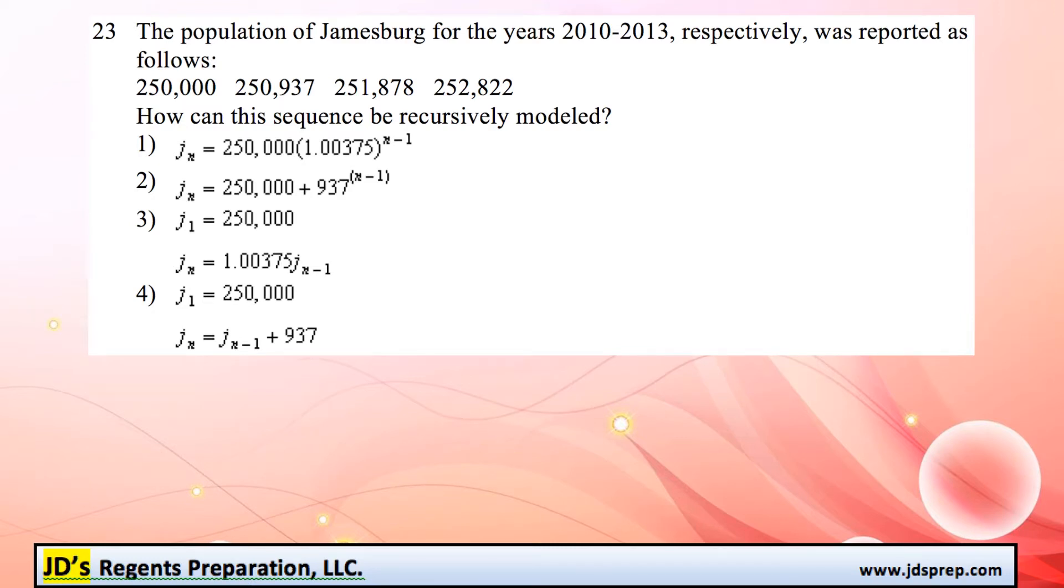This is question 23 from the June 2016 Algebra 2 exam. So we're looking at the population of Jamesburg from the years 2010 to 2013. We need to figure out how this sequence can be recursively modeled.